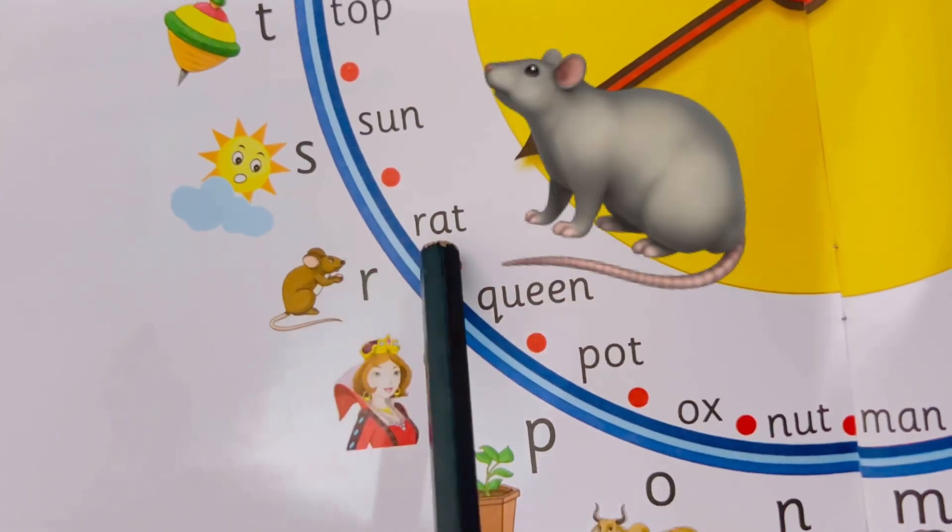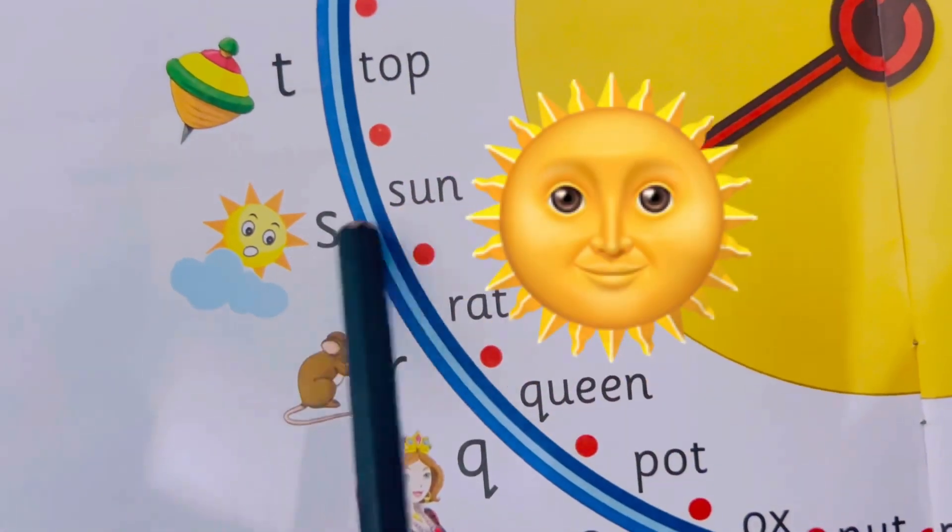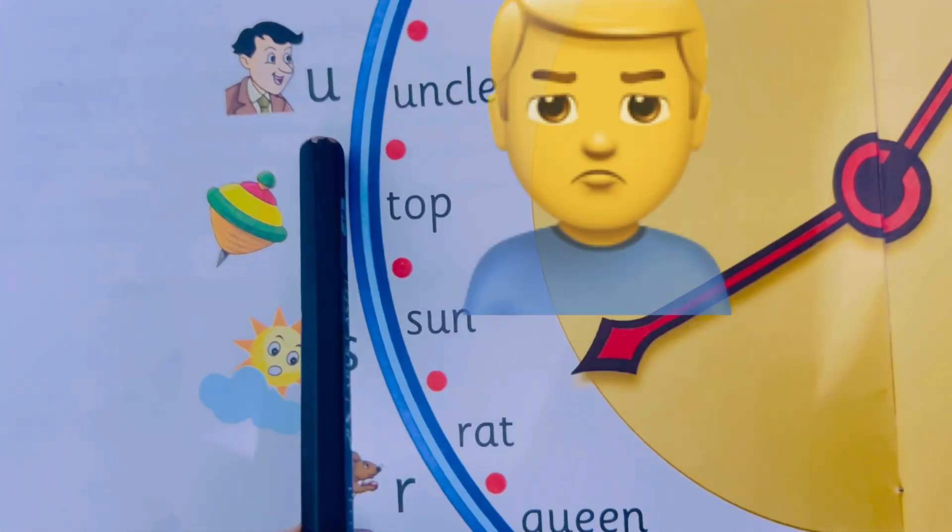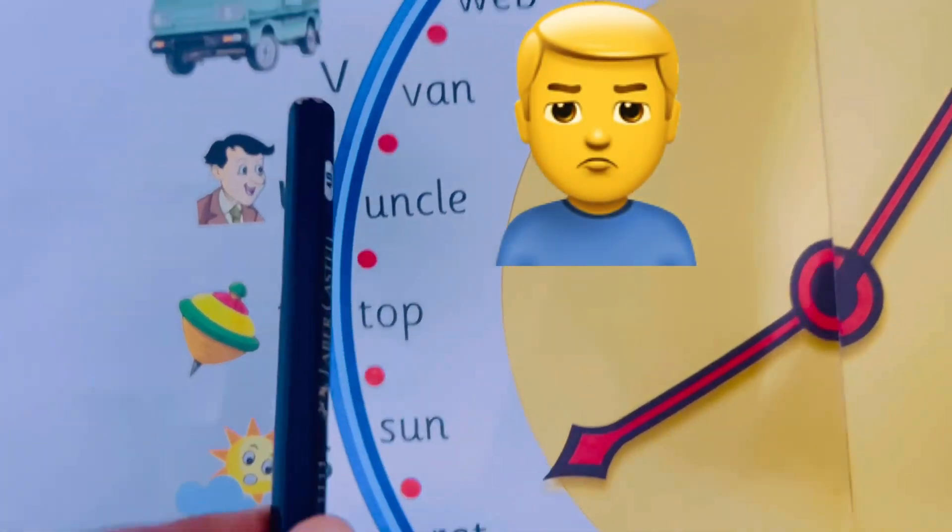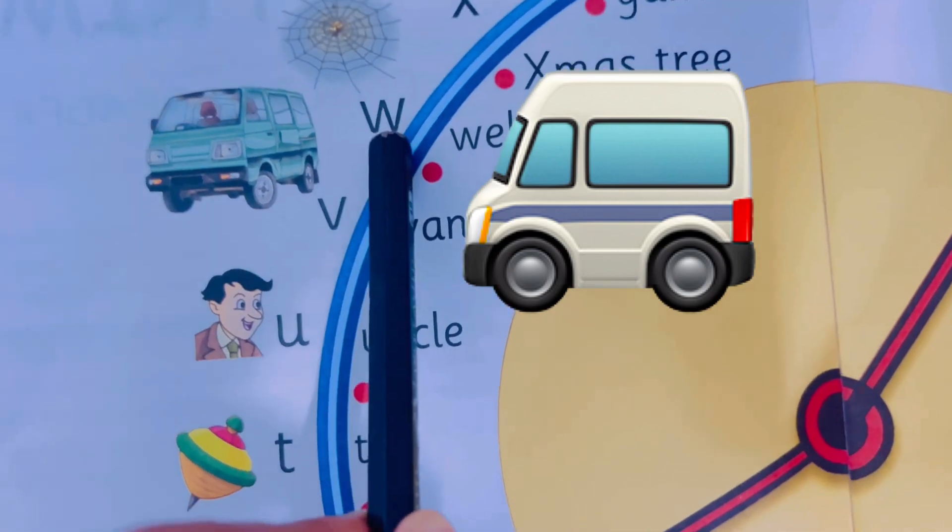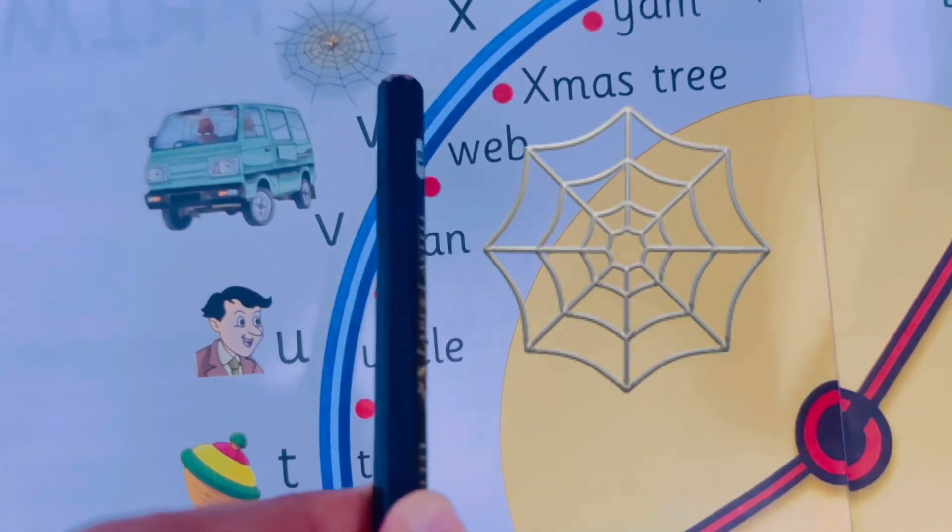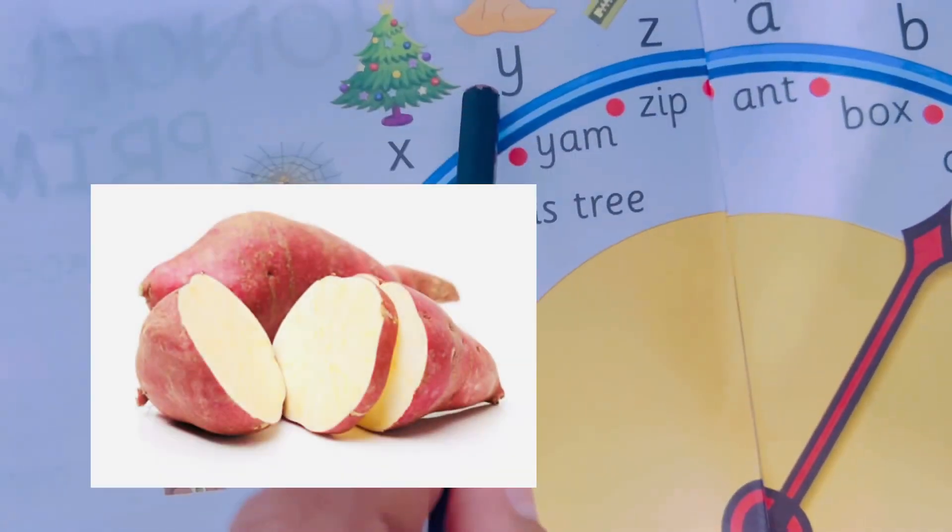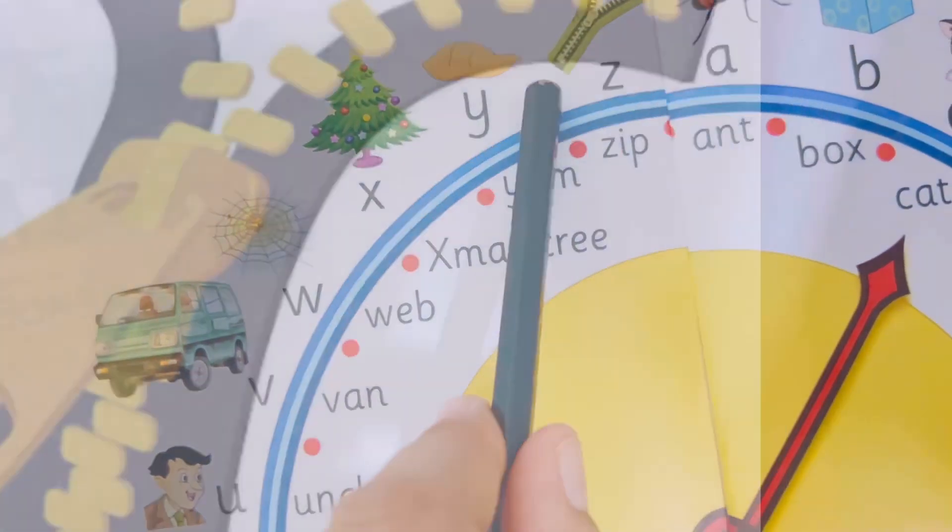Q, Queen. R, Rat. S, Sun. T, Top. U, Uncle. V, Van. W, Web. X, Christmas tree. Y, Yam. Z, Zip.